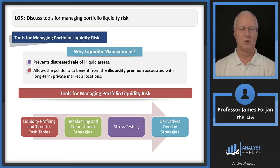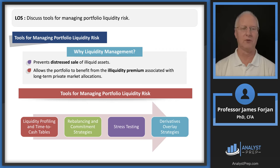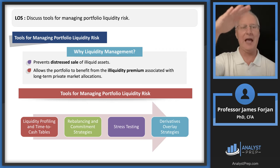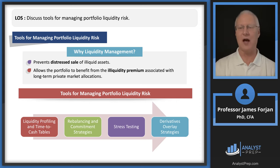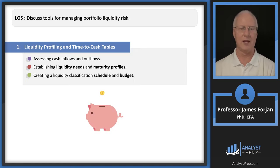The offset of forced sales is the illiquidity premium associated with lots of alternative investments. There are tools for this: a time-to-cash table, rebalancing and commitment strategies — especially as they relate to alternatives like private equity or hedge funds — and stress testing. There's also a derivative overlay strategy. Think of it this way: you own an asset, and you can lay a derivative on top of it. The Institute calls that an overlay strategy — essentially a two-asset portfolio of the underlying spot asset and the derivative security.